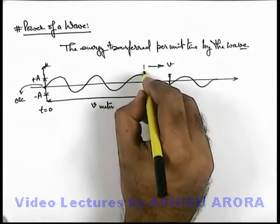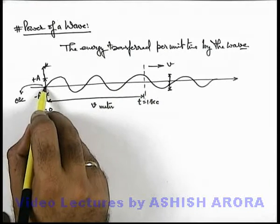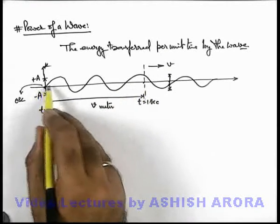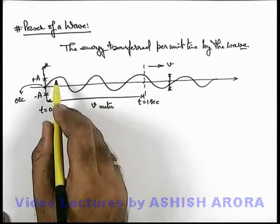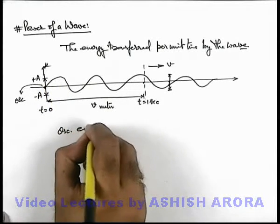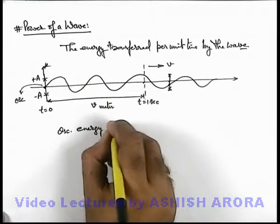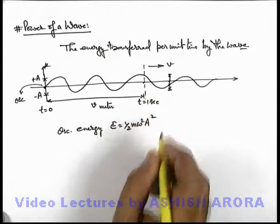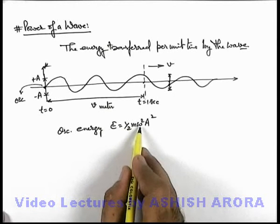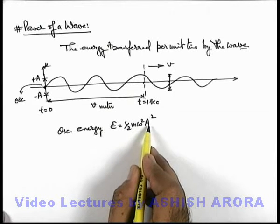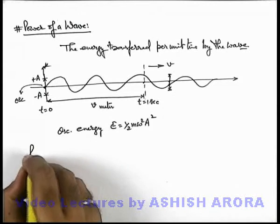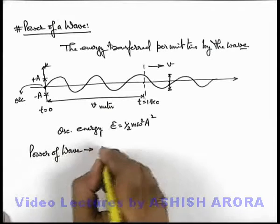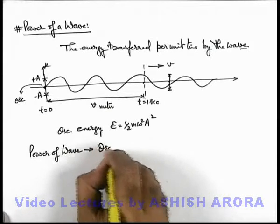That means all the medium particles from the origin, or from the point of the oscillator, to a length of v meters will start oscillating with the same amplitude A. We know that the oscillation energy for simple harmonic motion is given as half m omega squared A squared. So in this situation we can simply define the power of the wave — it is the oscillation energy